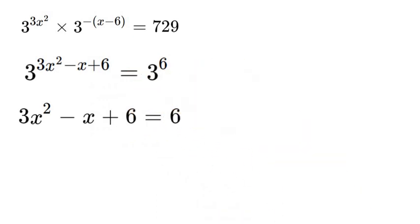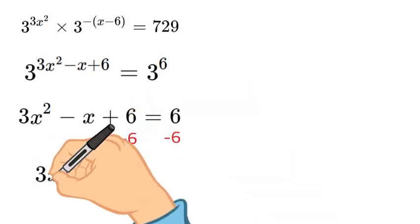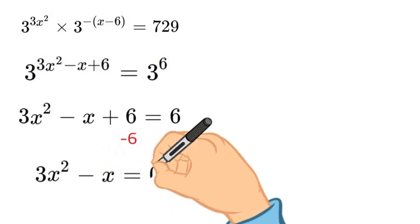So we can go ahead and subtract the 6 to cancel those out which will leave us with 3x squared minus x is equal to 0.